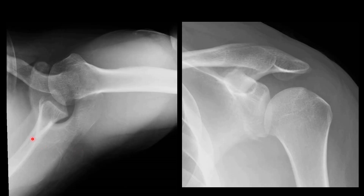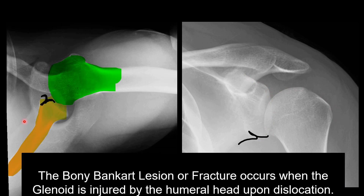Here are additional post-reduction films of a patient who suffered an anterior dislocation. On the left side, we have the axillary view where we are sighting up the patient's armpit with the glenoid here and the humeral head here. On the right side, we have an anterior projection of the shoulder, again with the glenoid and the humeral head. These images demonstrate another important finding that we can see in dislocation, mainly the bony Bankart lesion. The bony Bankart lesion is a fracture of the anterior portion of the glenoid rim where it's struck by the humeral head upon dislocation.